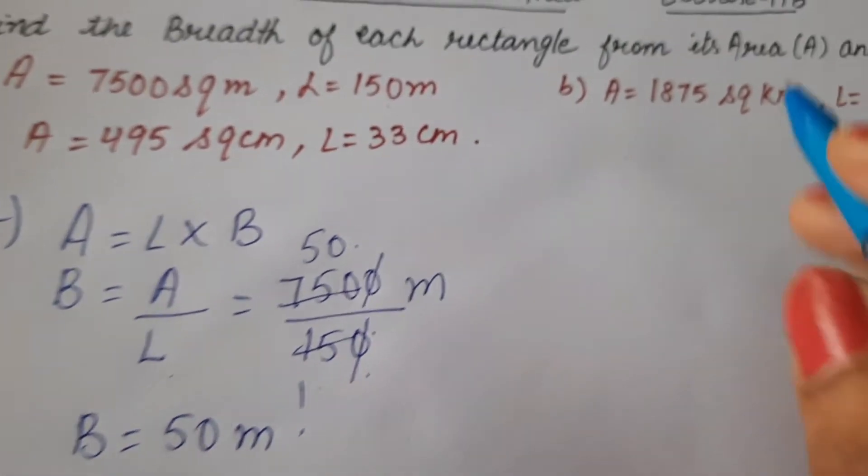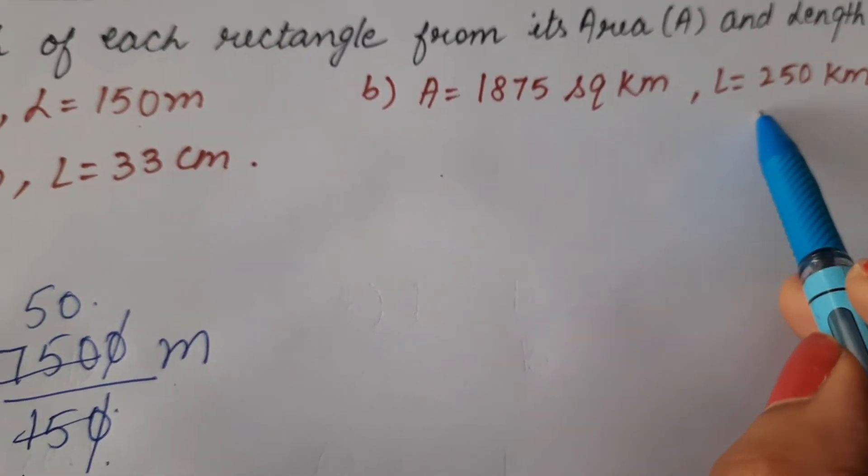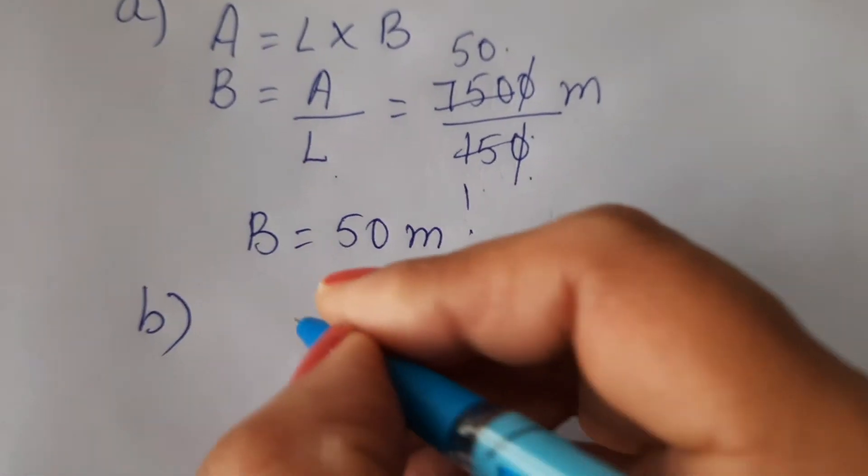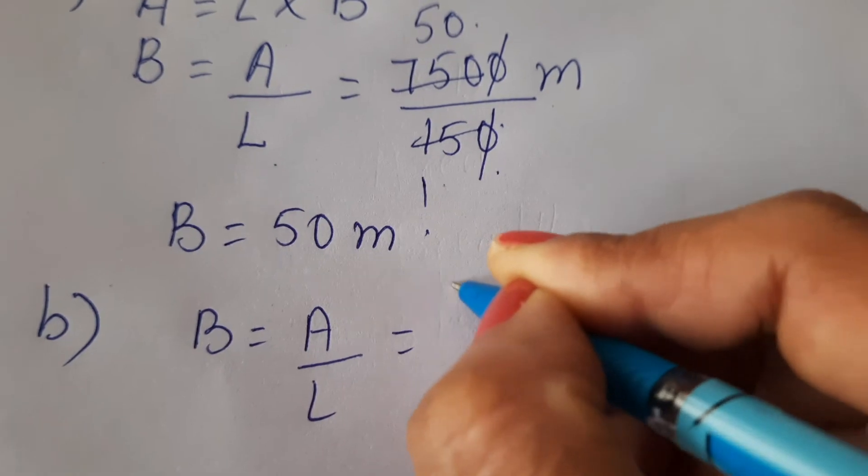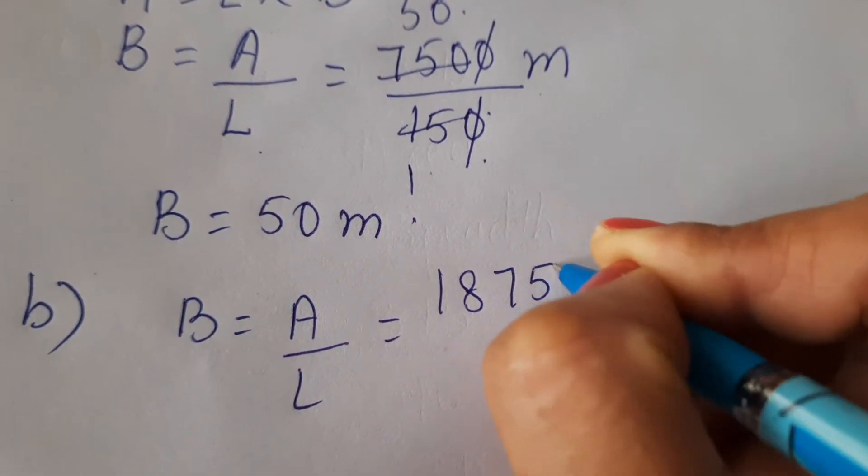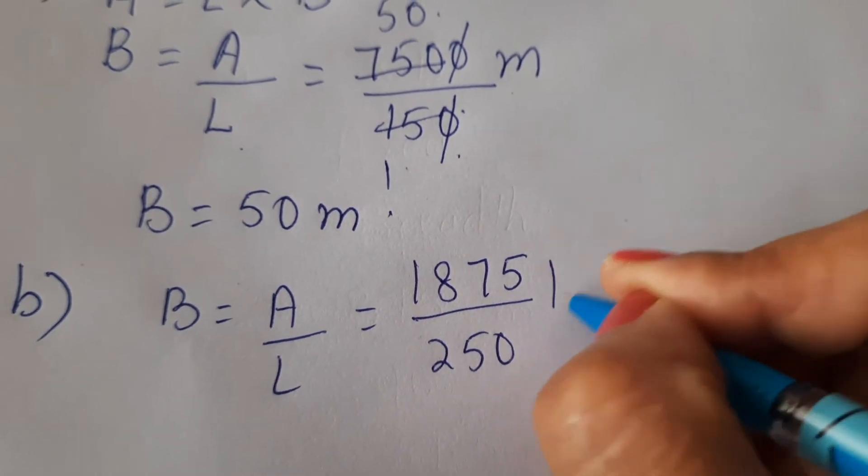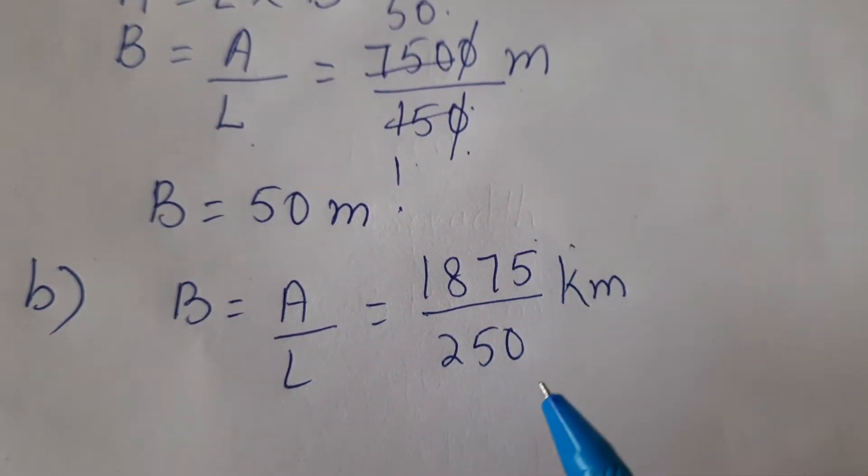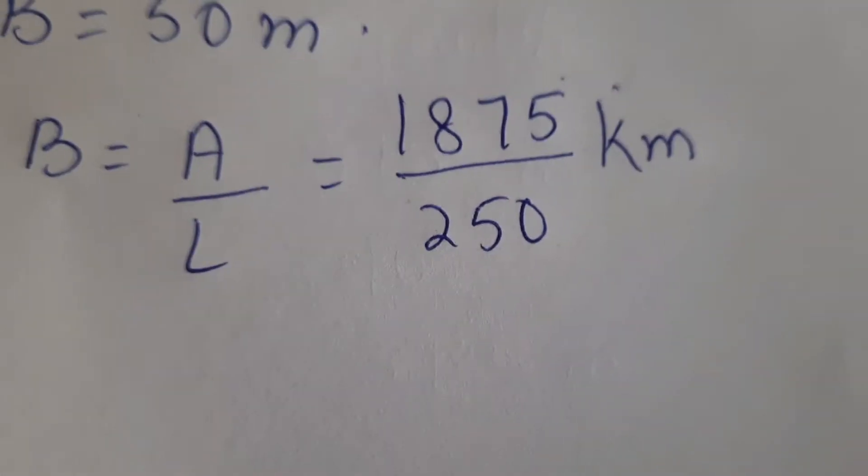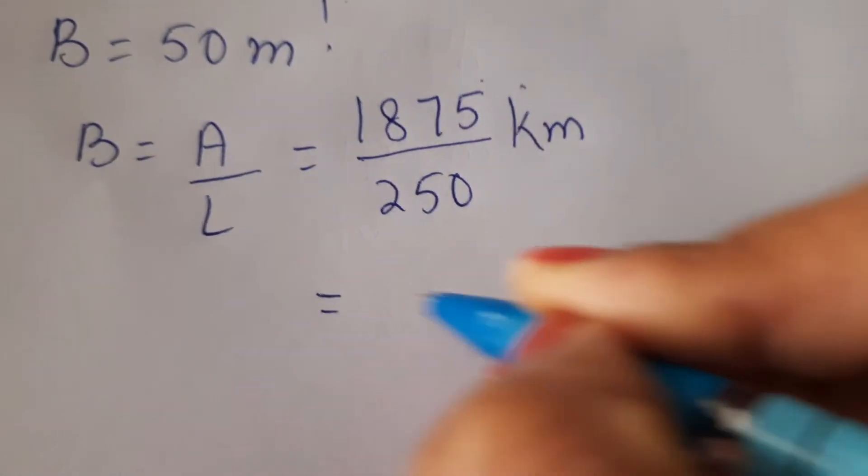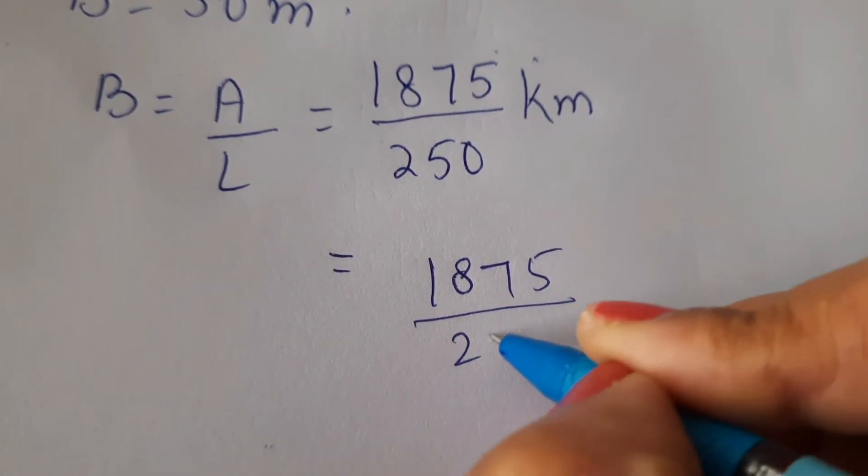In part B, area is 1875 square kilometers and length is 250 kilometers. So breadth will be area divided by length, which is 1875 divided by 250. Now let's solve it.